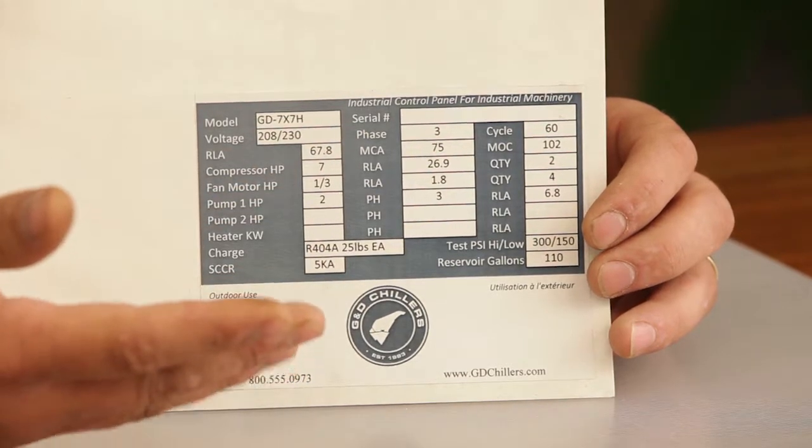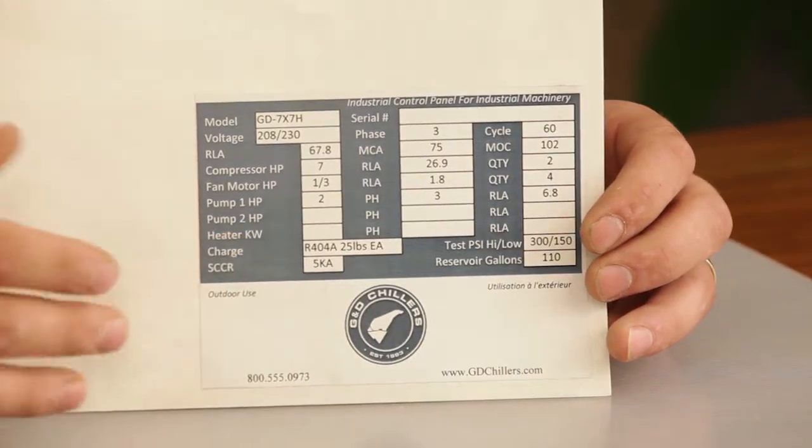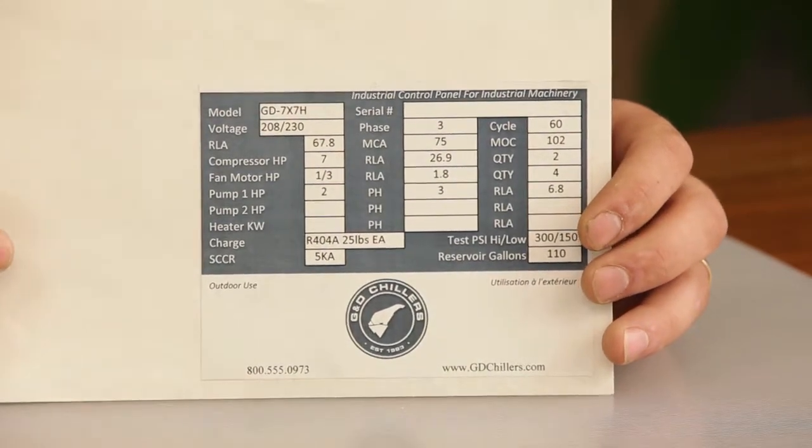We also offer chillers in 480, 460 volt, three phase. Custom voltages upon request are also a possibility for G&D chillers.